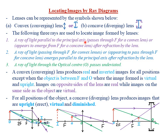The same ray also applies for concave or diverging lenses, but in that case a ray of light parallel to the principal axis appears to emerge from f after refraction by the lens. Consider this ray incident on a concave lens — it is parallel to the principal axis. After refraction, it appears as though it is emanating or originating from the principal focus f.